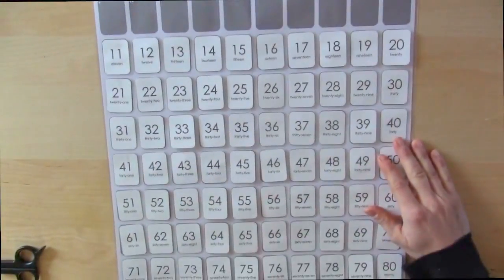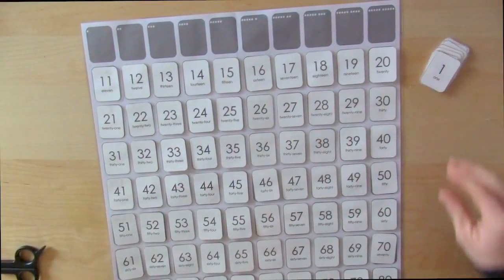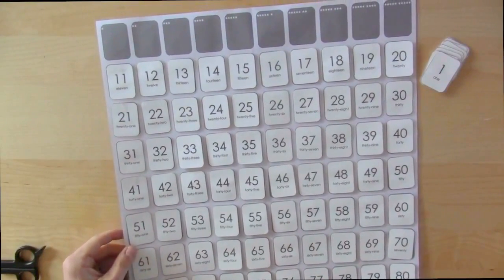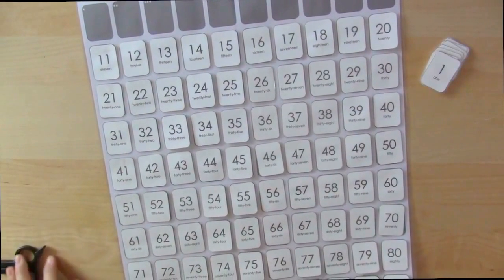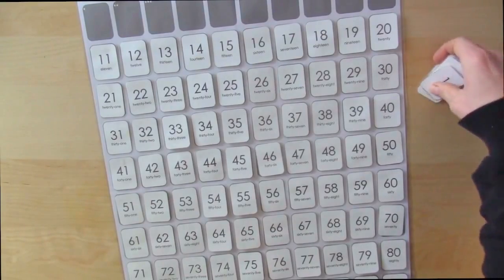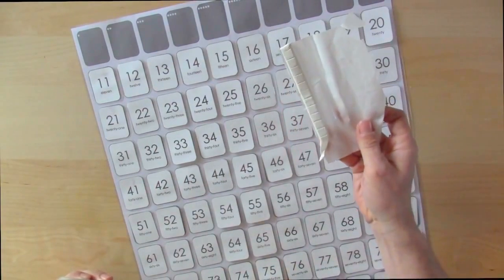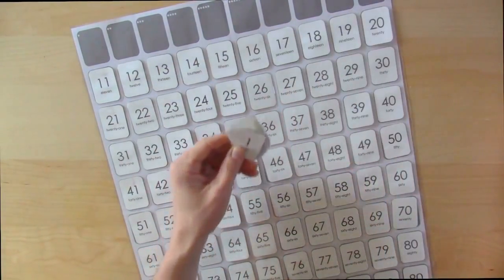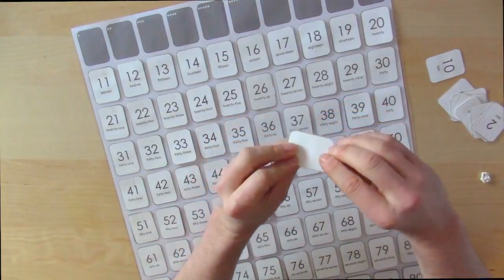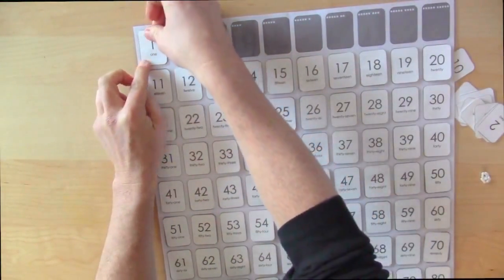Okay, so here we are. I have laminated all 100 cards and I've put the cards onto the amount background of the hundreds chart here, and the last thing I need to do is just put numbers 1 through 10. So all I do is I've got a little blue tack here, and I just put a little wee bit on the back of each of these cards, just a small amount, and stick them where they need to go.